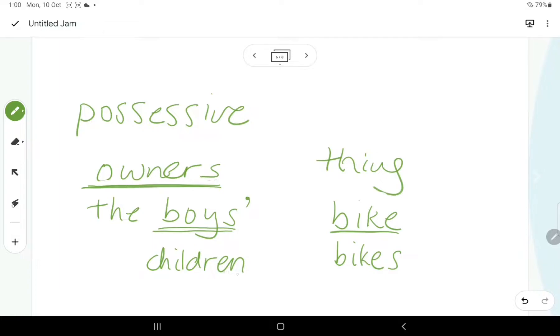What happens if you've got a plural that is already made into a plural without using an S at the end of it? So, for example, children. So, we can just say the children's bikes.